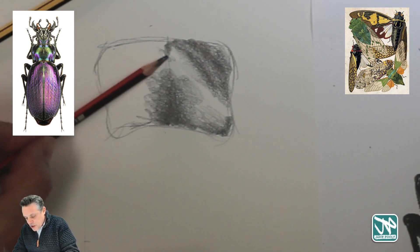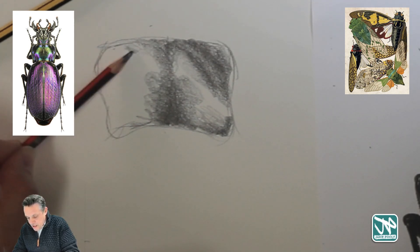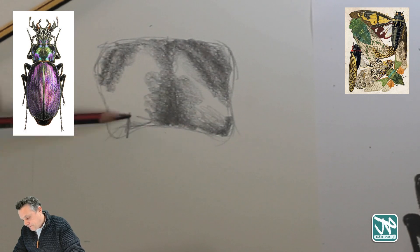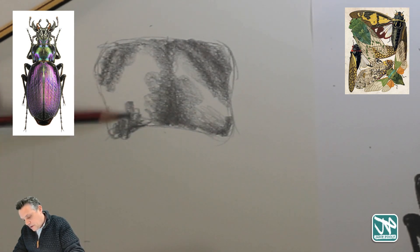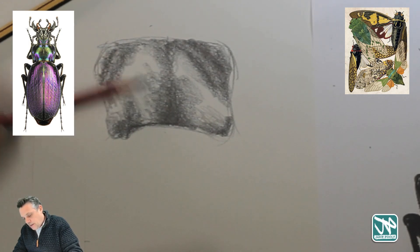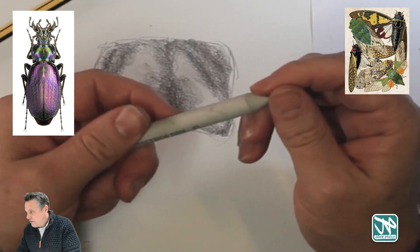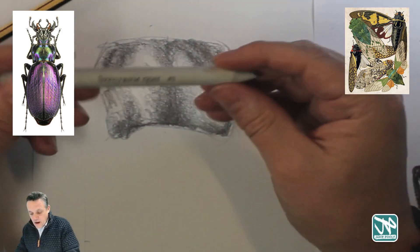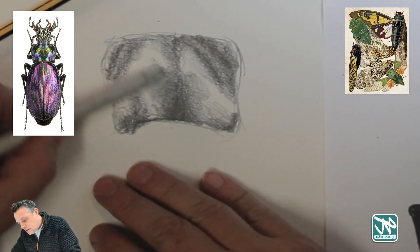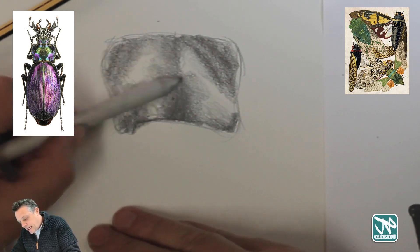You can almost start to create this shiny effect very quickly on the back of the insect — his armour, let's say. You can shade these areas, still using the side of the pencil to keep it soft. Then there are tools like a cotton bud, a piece of paper, or a paper towel — these blending sticks are made of paper pulp and you can rub the surface of the drawing to smooth it off and take away some of the graininess.